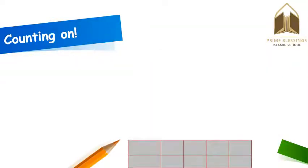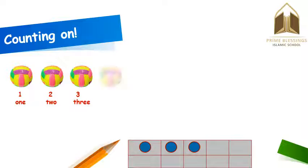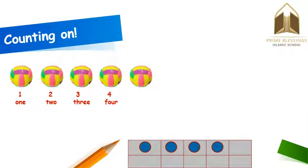Now kids, let's count on. How many balls do you see here? There is only one ball. If I add one more ball, then how many balls are there? There are two balls. If I add one more ball, then how many balls are there? There are three balls. If I add one more ball, how many balls do you see? Yes, there are four balls. If I add one more ball, then how many balls are there? There are five balls.